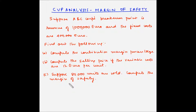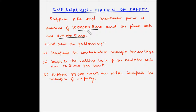Let us look at another example of cost-volume-profit analysis with an emphasis on margin of safety. Suppose ABC Corp's breakeven point is a revenue of 1 million euro and the fixed costs are 400,000 euro. ABC Corp's breakeven point at 1 million euro means that once it has hit that revenue, it has recovered all its costs — a no profit, no loss situation. Out of the total cost, the fixed cost is 400,000 euro.